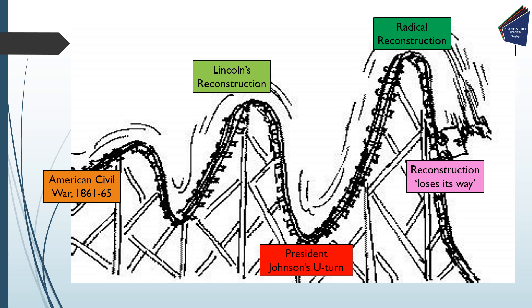You can see the path of reconstruction on the slide, and you should think of it as a roller coaster with numerous ups and downs for African-Americans throughout the time period. You will need to know the different phases of reconstruction and some of the policies passed during these. Starting with what Lincoln introduced, after his assassination we see a dramatic drop where President Johnson takes over and makes many U-turns, denting the hopes of many African-Americans.